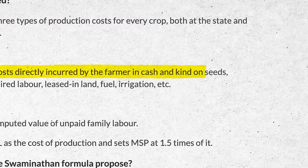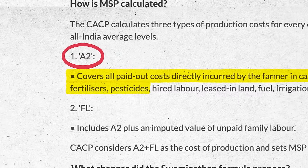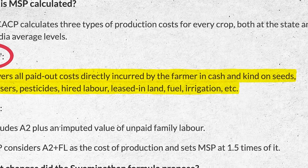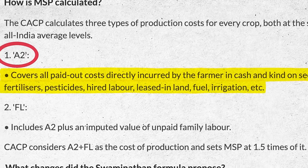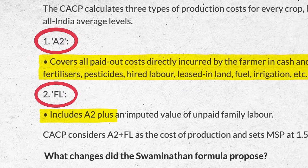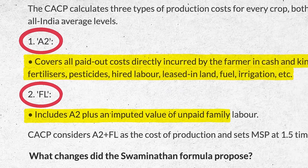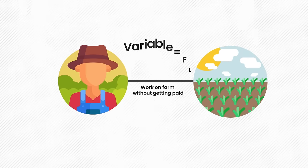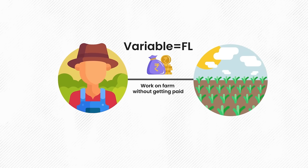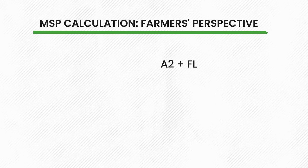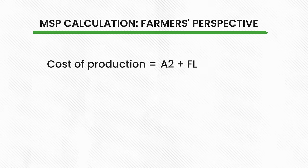Thirdly, the farmers are proposing a specific method to calculate the MSP. The Commission for Agricultural Costs and Prices (CACP) is the brain behind calculating MSP, and they look at two major costs. The first variable is A2 cost, which includes everything the farmers spend money on — seeds, fertilizers, pesticides, paying workers, fuel, and watering the crops. Then there is a variable called FL, which adds to A2 by estimating the value of work done by the farmer's family — if the farmer or family members work on the farm without getting paid, this variable puts a price on that effort.